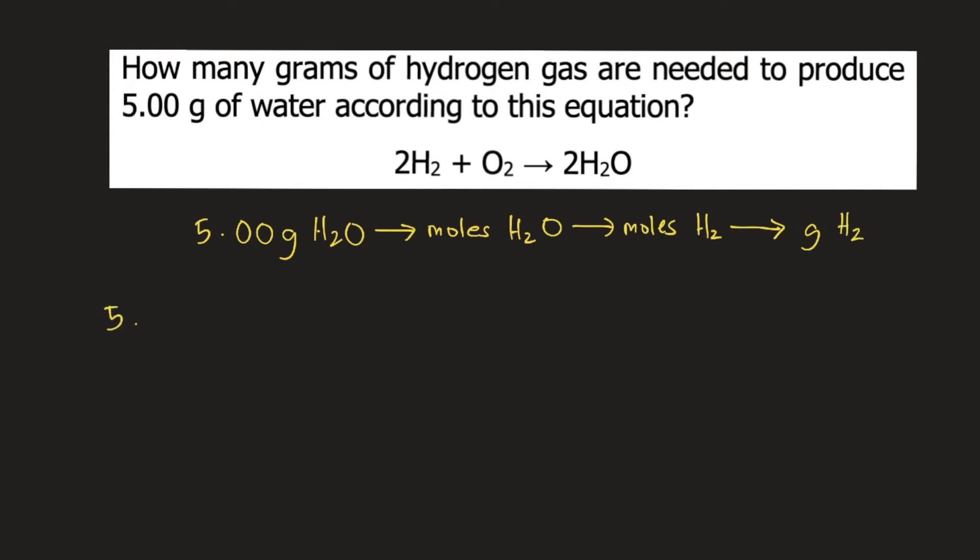Let's do the conversions starting with 5 grams of water. In order to convert grams into moles, we need the molar mass of water. The molar mass of water is 18.016 grams per mole.